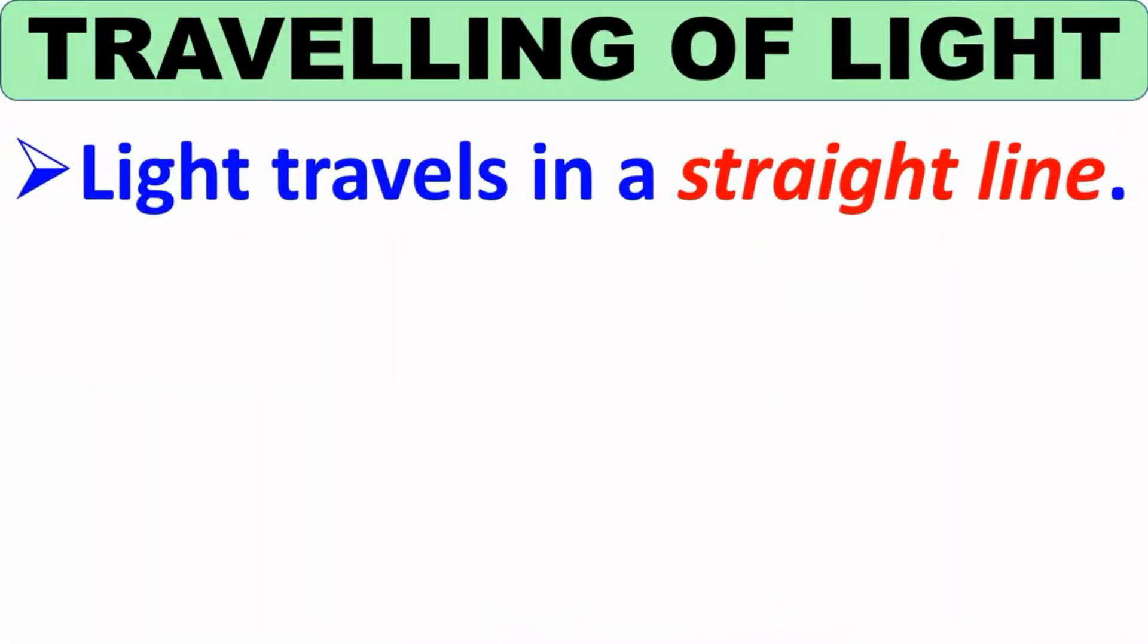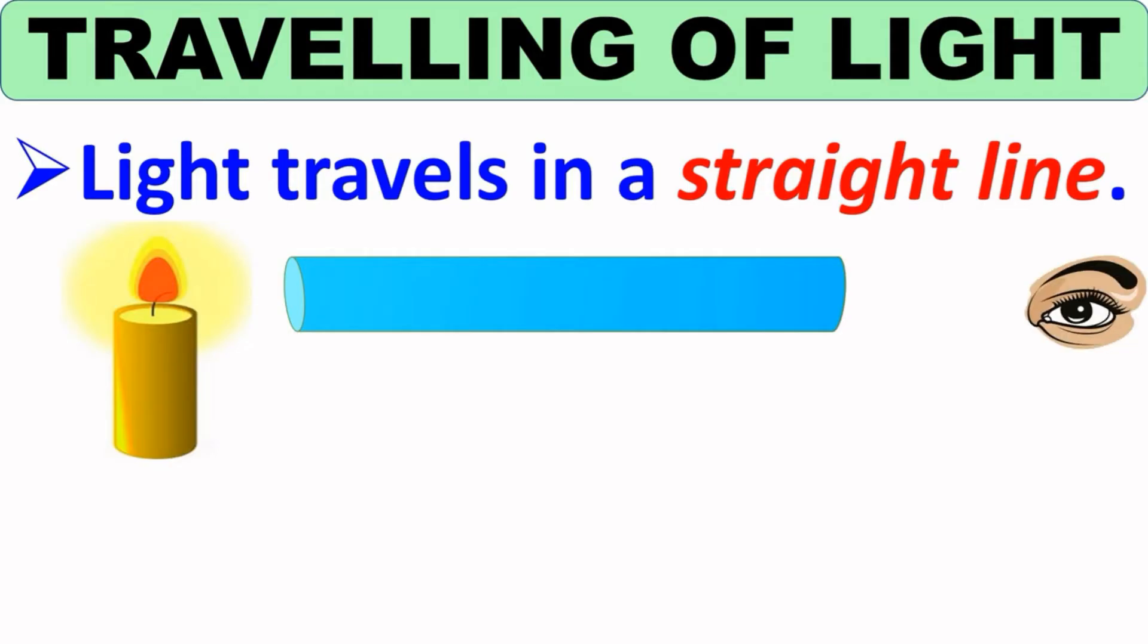Next is traveling of light. Light travels in a straight line. Now, how can we say this? Let's do an activity. Take a candle and light it. Take a straight hollow pipe, point one end at the lighted candle and look through the other end of the pipe. Do you see light at the other end? Yes, you will be able to see the light. But now,